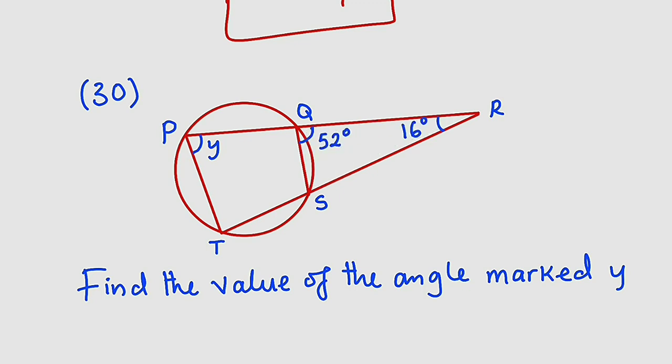What about this one? This is an exterior angle of that triangle. And according to the theorem, it is stated that the exterior angle of a triangle is equal to the sum of the two interior opposite angles.